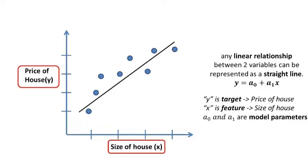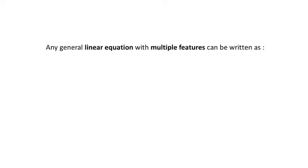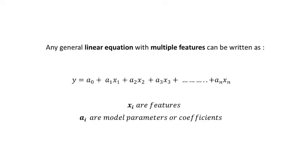But what if there are more than one feature? Any general linear equation with multiple features can be written as y equals a naught plus a1x1 plus a2x2 and so on up to an xn, where xi's, that are x1, x2 till xn, are features. ai's, that is a naught, a1 and so on till an, are model parameters, and y is target variable.